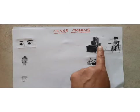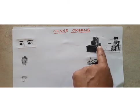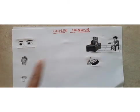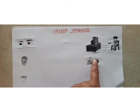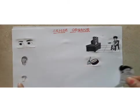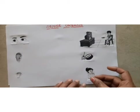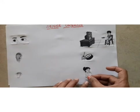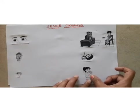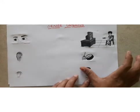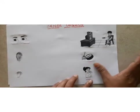Eyes help us to see the world — TV, mobile, etc. Ears help us to hear all types of sounds. Tongue helps us to taste.